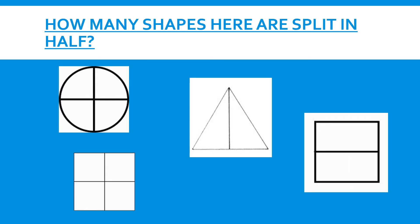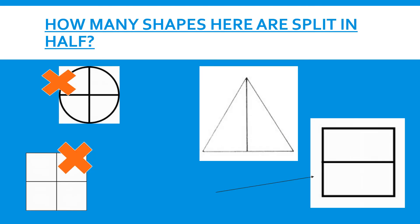Look at the shapes below. Can you see which shapes are split into half? Here the triangle is split into half and the square is split into half. Did you get it correct?